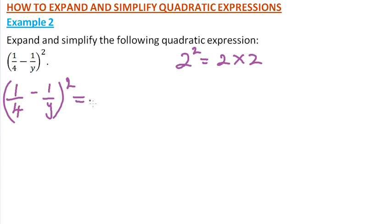Then we can write this as 1 over 4 minus 1 over y across the bracket, and again, 1 over 4 minus 1 over y across the bracket.